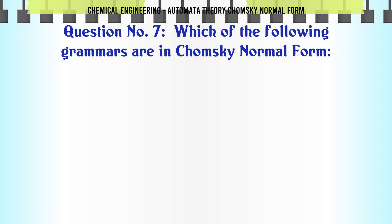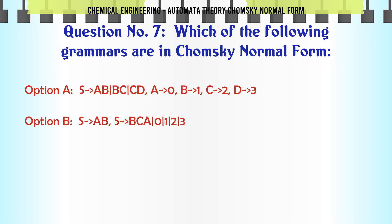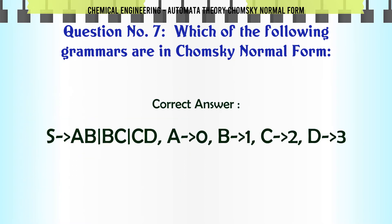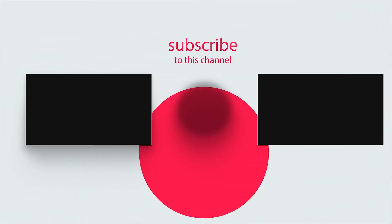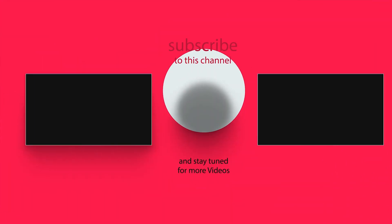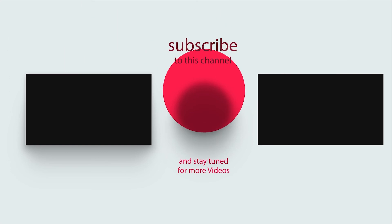Which of the following grammars are in Chomsky normal form? A. S → AB, B → C, C → D, A → 0, B → 1, C → 2, D → 3. B. S → AB, S → BC, A → 0, B → 1, C → 2, D → 3. C. S → AB, A → R, B → A, C → D. D. All of the mentioned. The correct answer is: S → AB, B → C, D, A → 0, B → 1, C → 2, D → 3.